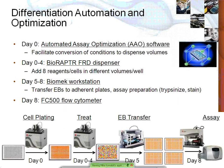The resulting workflow: on day zero, we used our automated assay optimization software (AAO) to convert conditions into dispense volumes read by our BioRaptor FRD dispensers. The BioRaptor dispensed cells and reagents — up to eight at a time — and could dispense different volumes per well. We then also treated cells with the BioRaptor from day zero to day four, resulting in very different conditions across the 384-well plate. On day five, our BioMek workstation transferred EBs to adherent 96-well plates, and on day eight, the BioMek trypsinized cells and stained them for flow cytometry analysis.